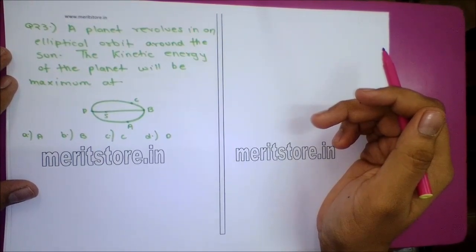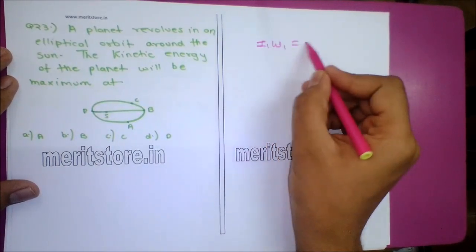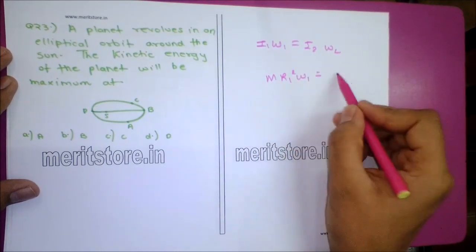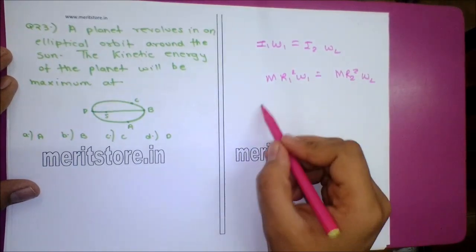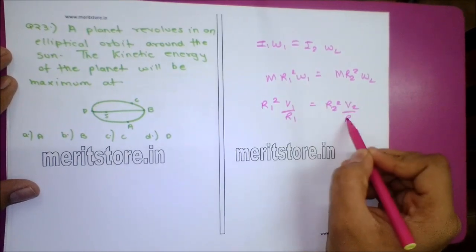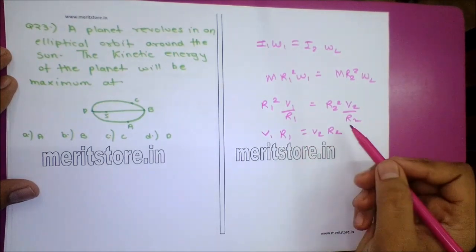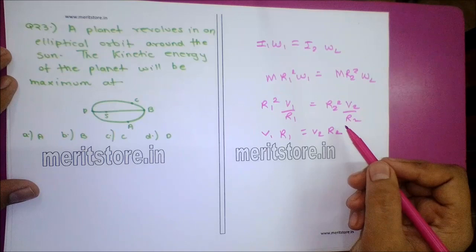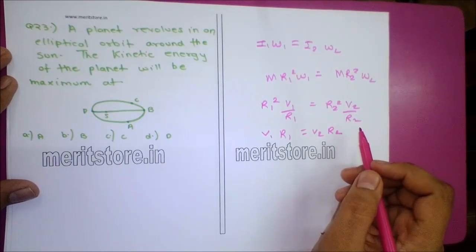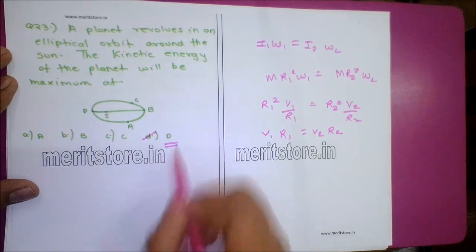Question 23: A planet revolves in an elliptical orbit around the Sun. The kinetic energy of the planet will be maximum at which point? By conservation of angular momentum, MR1²ω1 = MR2²ω2, giving V1R1 = V2R2. At point D, R is minimum, so V is maximum, and therefore kinetic energy is maximum. Option D is the correct answer.